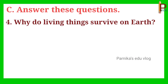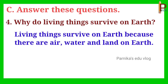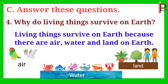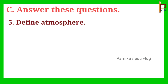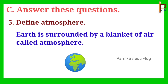Fourth: why do living things survive on earth? Answer: living things survive on earth because there are air, water and land on earth. Fifth one: define atmosphere. Answer: earth is surrounded by a blanket of air called atmosphere.